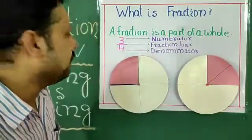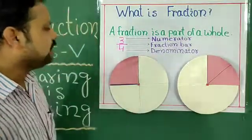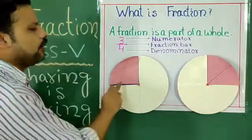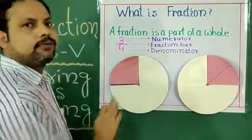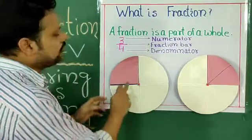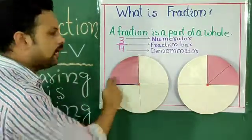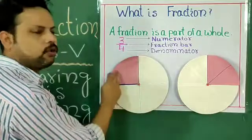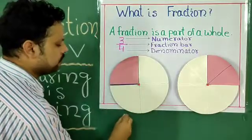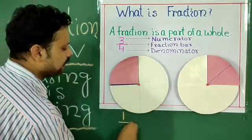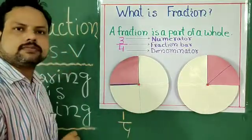Say I want to write 1 by 4. Take once: 1, 2, 3, 4 — out of 4, 1 part. So easily I can write 1 by 4.